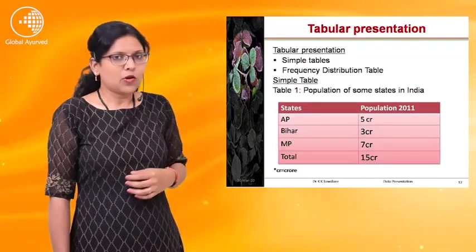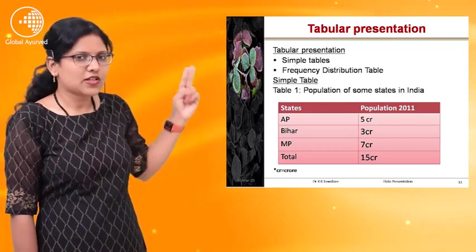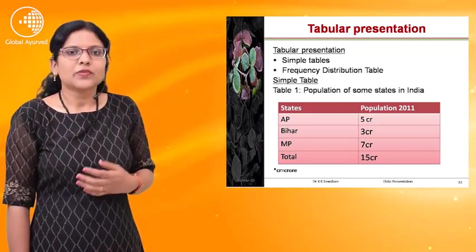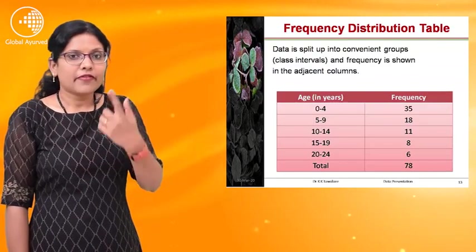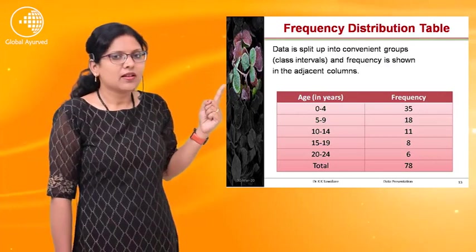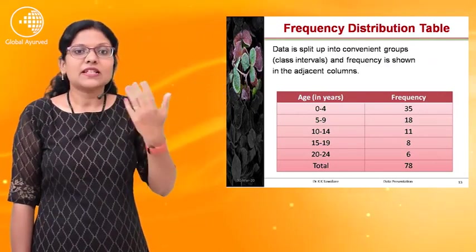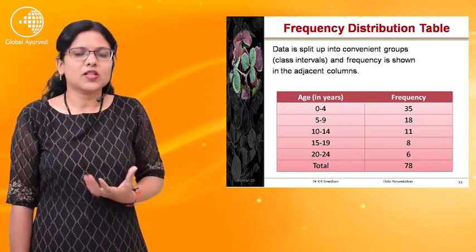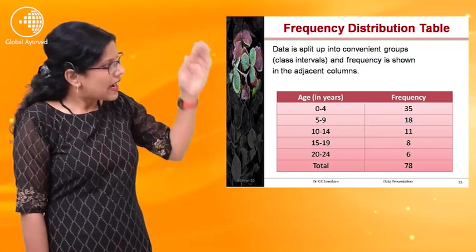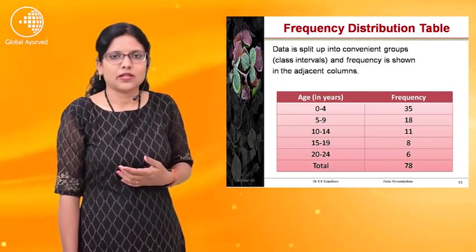This is an example of tabular presentation. A simple table has one variable — for example, state and population. That is called a simple table. The second type is the frequency distribution table, where age in years is split into class intervals such as 0–4, 5–9, and so on. The frequency is shown in the adjacent column. Such a presentation is called a frequency distribution table.